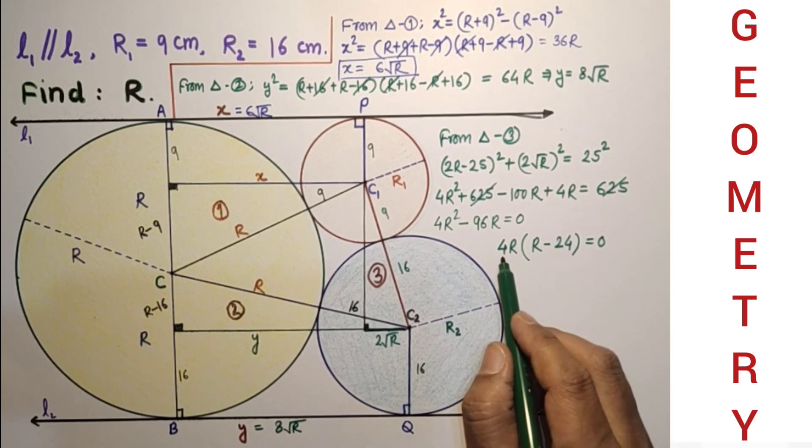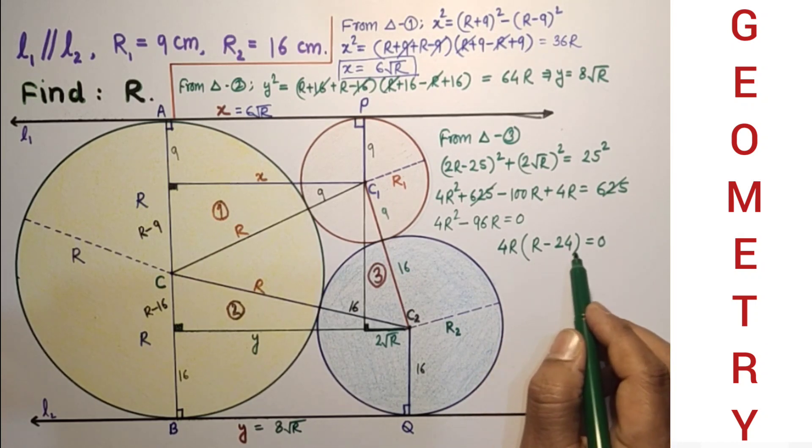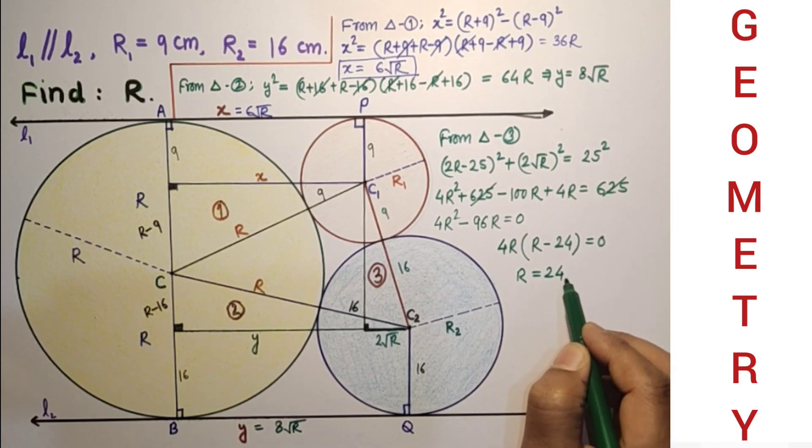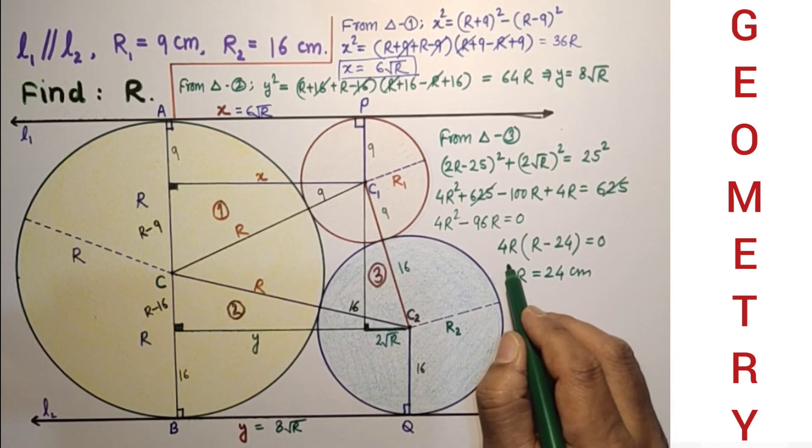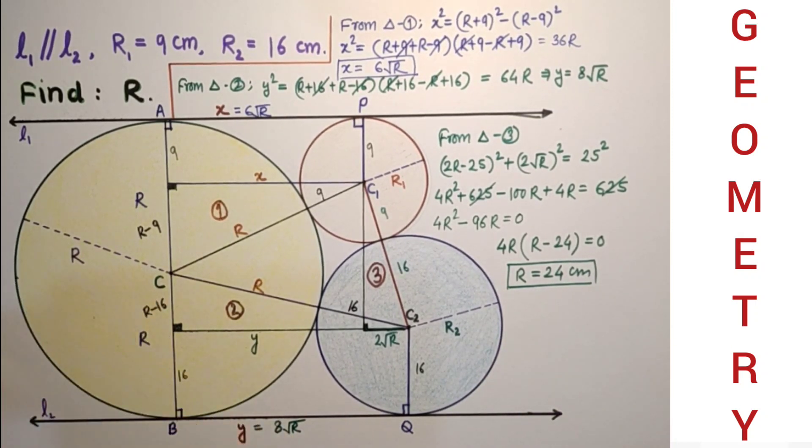Either 4R is 0 which gives R is 0 which is not possible, or R minus 24 is 0 gives R equals 24 cm. So this is the required answer, R equals 24 cm.